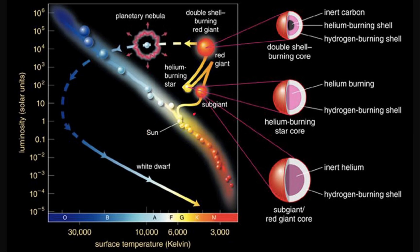The IB will ask you to sketch stellar evolution on an HR diagram. For a sun-like star: it spends about 10 billion years on the main sequence fusing hydrogen, then runs out of hydrogen and starts fusing helium, becoming a red giant — moving up and to the right to become much brighter and cooler. Then as it runs out of fuel it sheds a planetary nebula and the remnant ends up as a white dwarf in the lower left region. For the IB, you'd draw the path: start on main sequence, move up to red giant, then down to white dwarf.